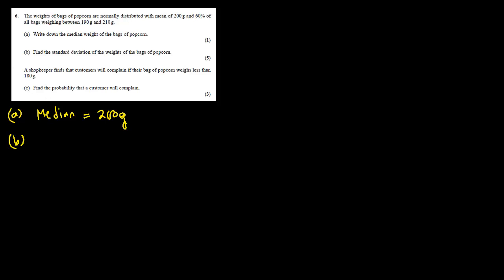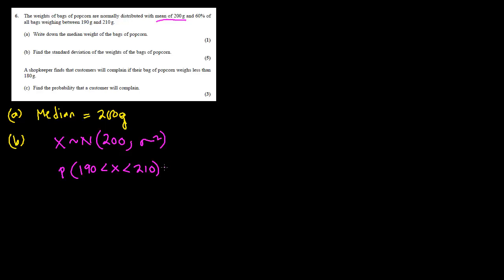In question B, the information we have is that the normal distribution has a mean of 200 grams, but the variance is not given. We have to find the variance — this is a normal distribution type two problem. The probability given is that all bags weighing between 190 grams and 210 grams is 60%.